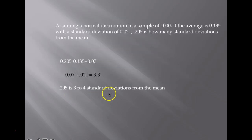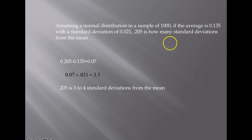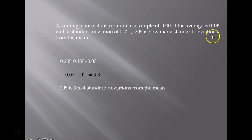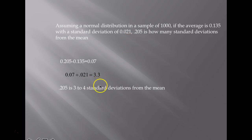Coming to the next question. Assuming a normal distribution in a sample of 1000, if the average is 0.135 with a standard deviation of 0.021, how many standard deviations from the mean is 0.205? Going to the bell-shaped curve, we have the average 0.135 at the center. Subtracting 0.135 from 0.205 gives 0.07. Dividing 0.07 by the standard deviation of 0.021 gives 3.3, which means 0.205 is 3 to 4 standard deviations from the mean.